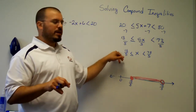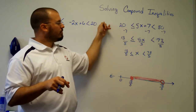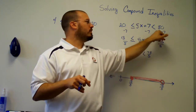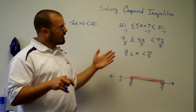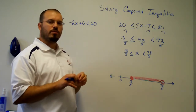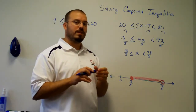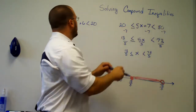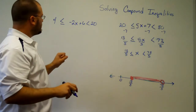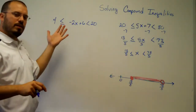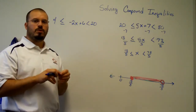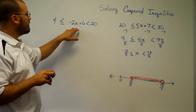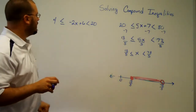So the second way to solve a compound inequality is to work through it as one piece, remembering that whatever you do to one part you must do to all three. It takes a little less writing. Now for the next example, I've introduced a negative, because when you divide by a negative you have to reverse the inequality symbol — and I want to show you that the same rule holds true with a compound inequality.